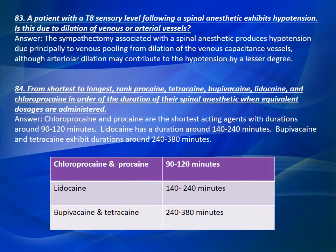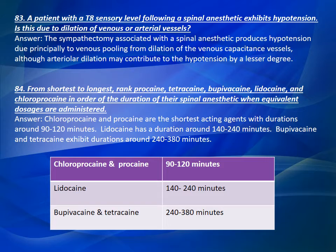Question 83: A patient with a T8 sensory level following a spinal anesthetic exhibits hypotension. Is this due to dilation of venous or arterial vessels? The sympathectomy associated with the spinal anesthetic produces hypotension due principally to venous pooling from dilation of the venous capacitance vessels, although arteriolar dilation may contribute to the hypotension to a lesser degree.